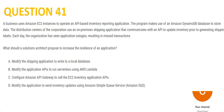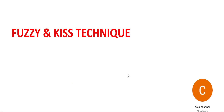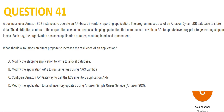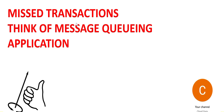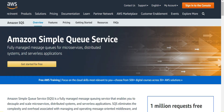Question 41 — please pause the video to read it carefully. I can apply a fuzzy and KISS technique. KISS means 'Keep It Simple and Stupid.' In this question, I understood there are three components communicating. The keyword here is 'missed transactions.' Whenever you see missed transactions, always remember this thumb rule: think of message queuing applications like SQS.